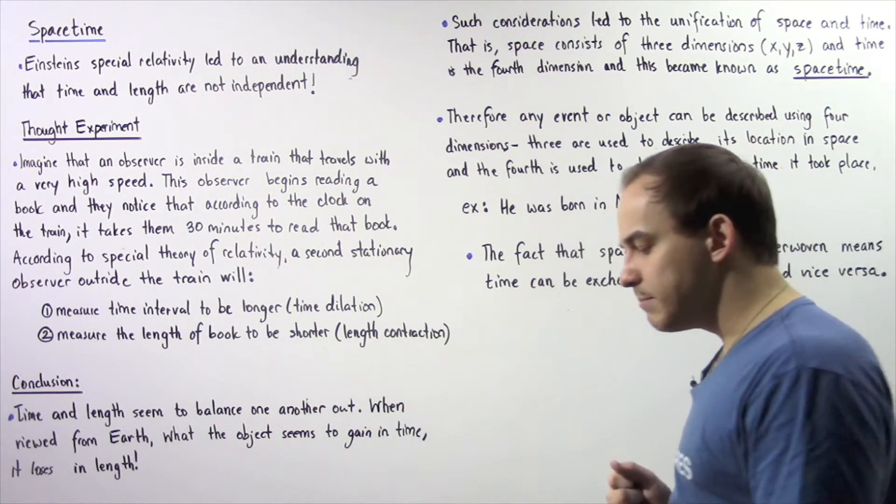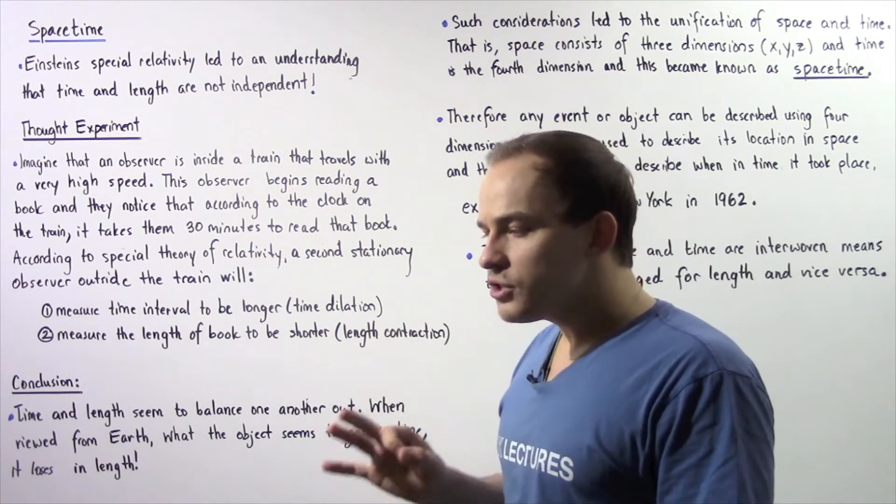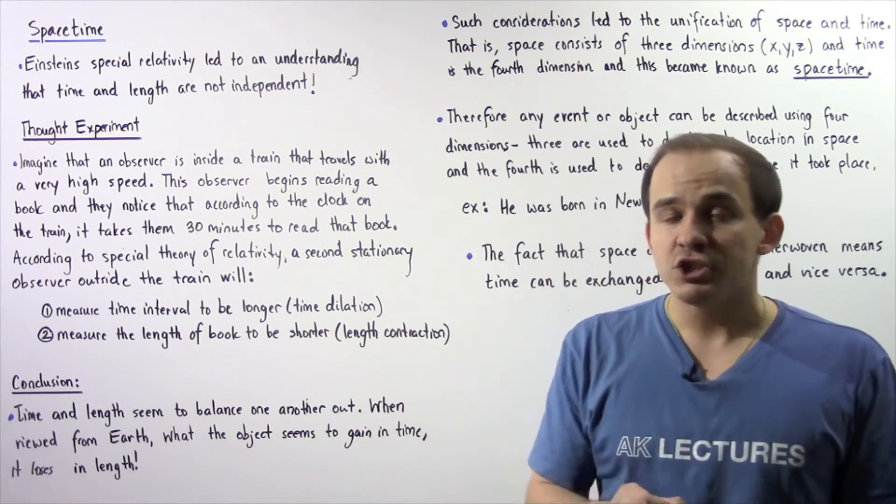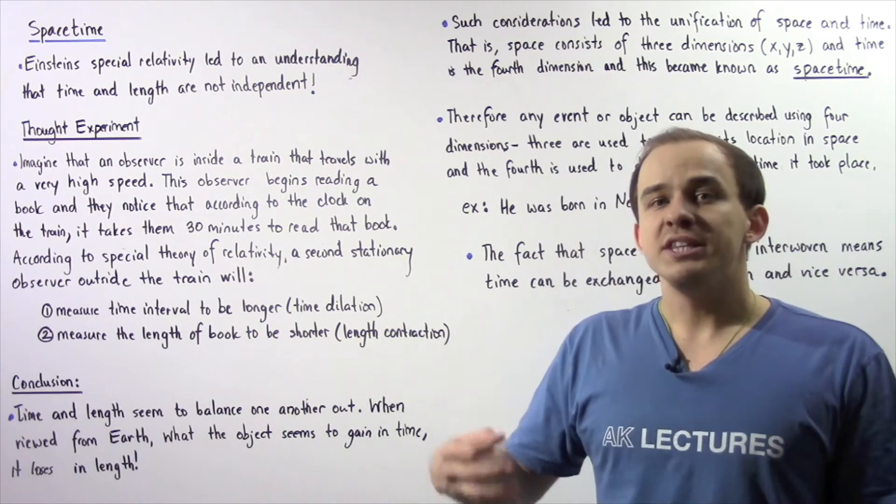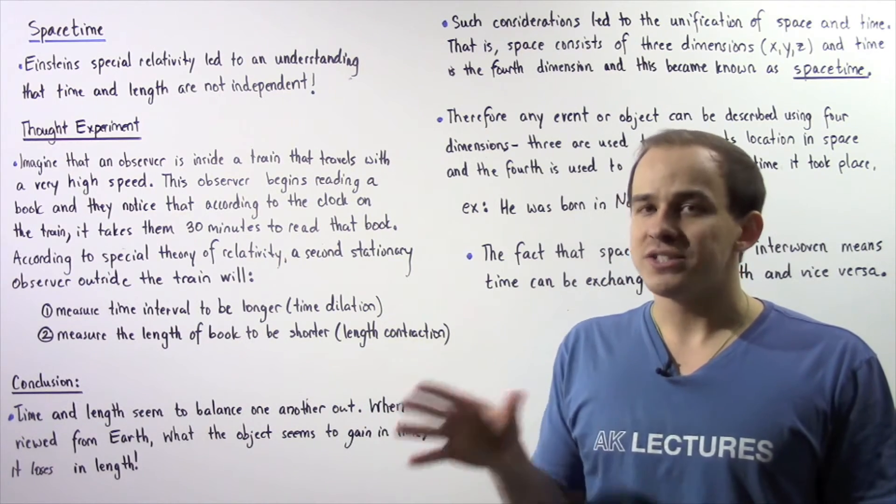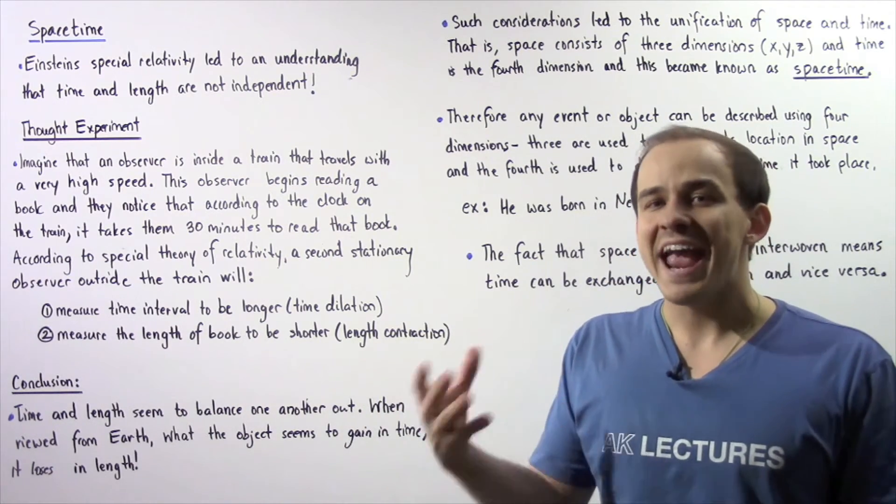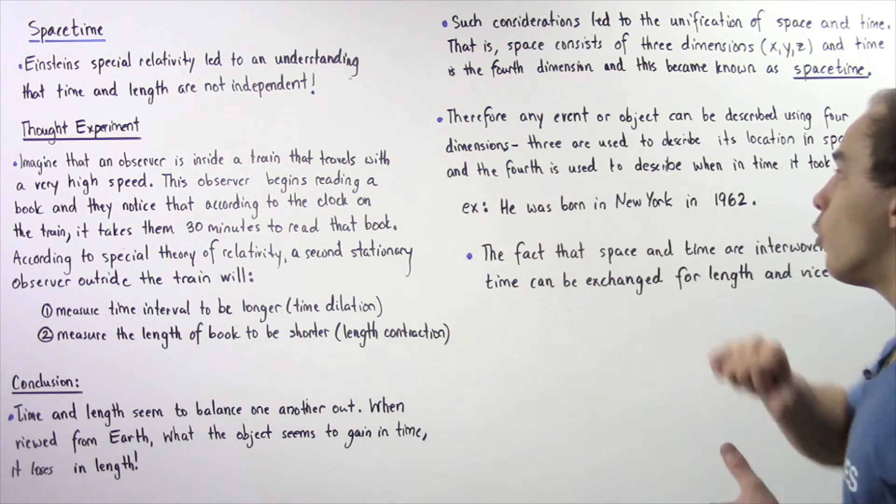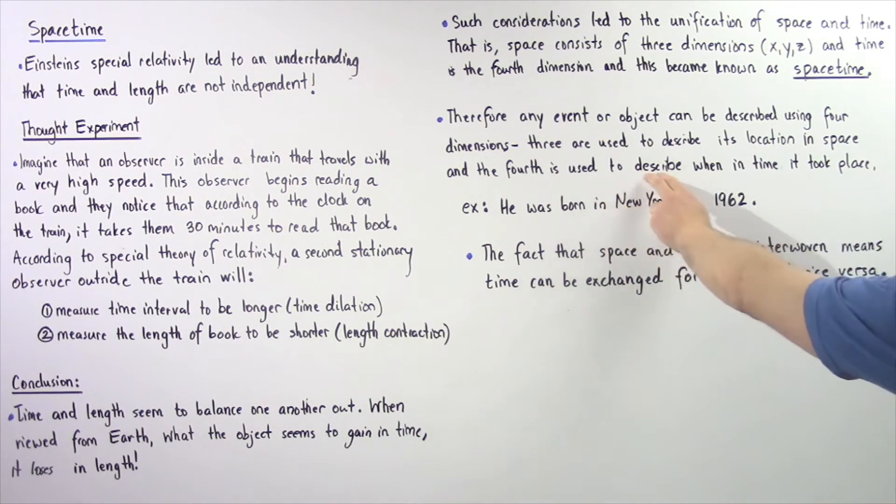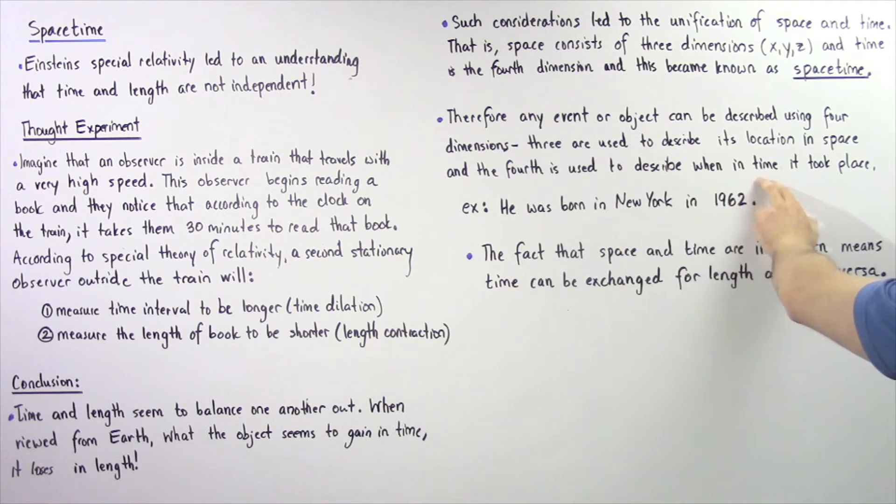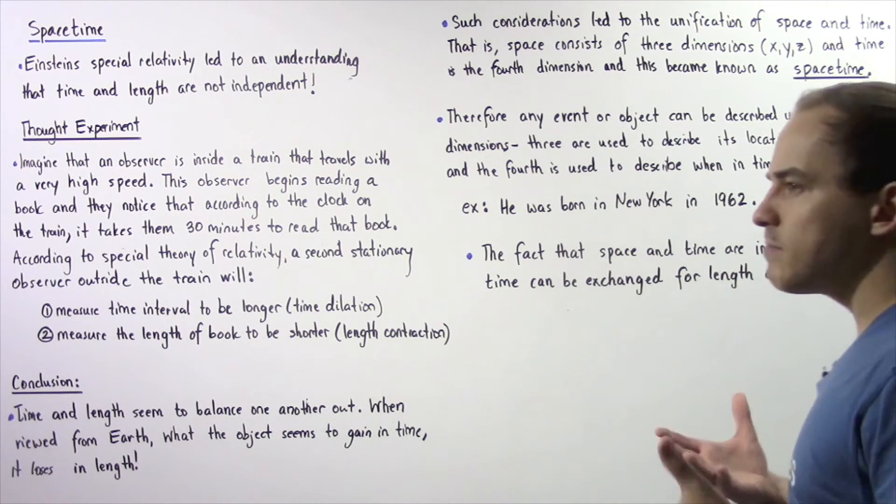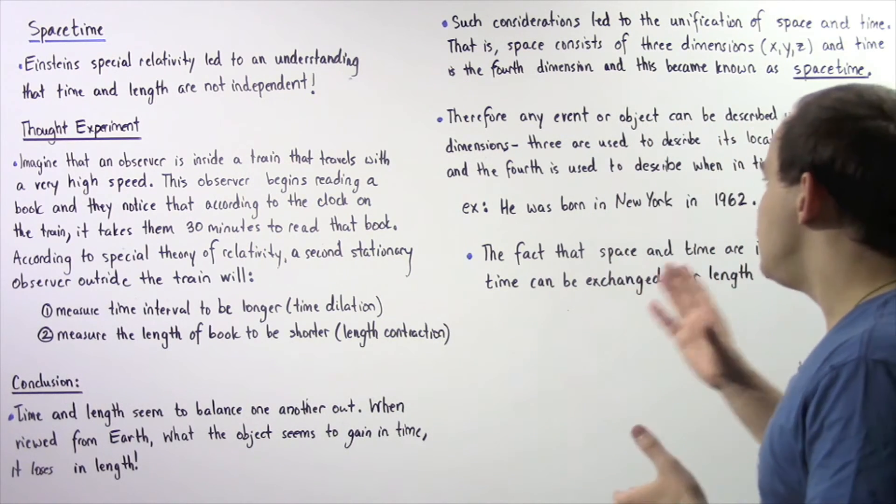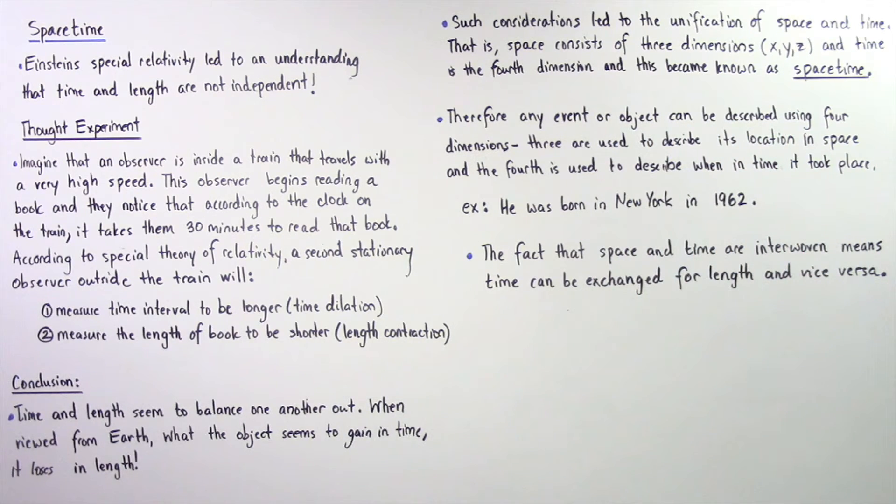That basically implies that in order to describe an event or object, the three dimensions are used to essentially describe the location of that object or event in space, and the fourth dimension is used to describe when in time it actually took place. Let's suppose I was born in New York in 1962.